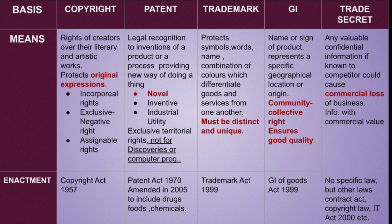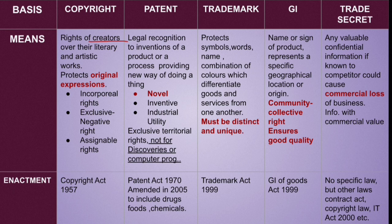When copyright, patent, and trademark come together in one question with options, we get confused. So to avoid that confusion, I have presented these in a differentiated form. Let's discuss the meaning first. Copyright — rights of a creator over their literary or artistic work, which protects original expression. This word 'original expression' is very important. A question may directly ask: which IPR right protects original expressions? And the answer would be copyright. Further, copyright is an incorporeal right — it is intangible, exclusive, negative, and assignable.